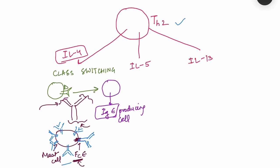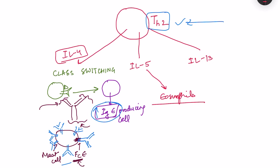On subsequent exposure to the antigen, there is increased proliferation of TH2 cells, more efficient release of cytokines, and increased production of IgE antibodies. Interleukin-5 is responsible for the recruitment of eosinophils, which are very important mediators of Type 1 hypersensitivity. IL-13 enhances the production of IgE antibodies by IgE-producing B cells.